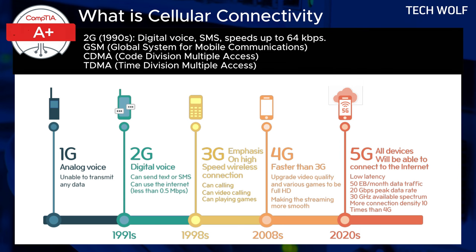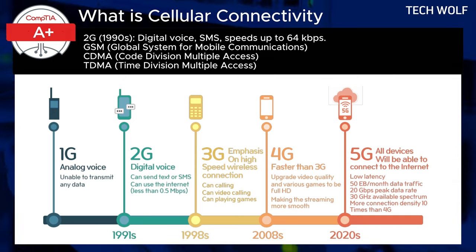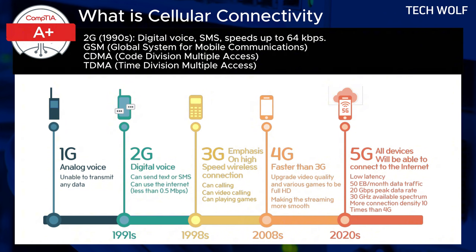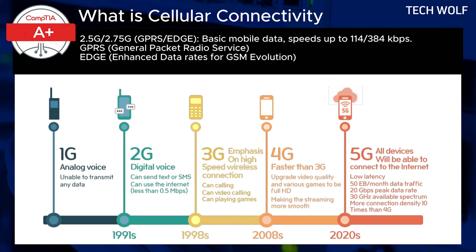2G, or second generation networks, launched in the early 1990s, was the first digital cellular technology. It significantly improved call quality, security, and enabled SMS or text messaging, which was groundbreaking at the time. 2G introduced several standards like GSM (Global System for Mobile Communications), CDMA (Code Division Multiple Access), and TDMA (Time Division Multiple Access). 2G offered data speeds up to 64 kilobits per second — enough for basic calls, texting, and very limited mobile data. With 2G, encryption became possible, improving security over 1G.